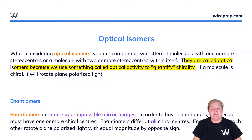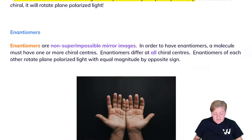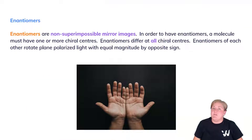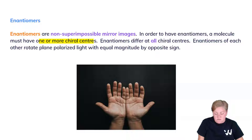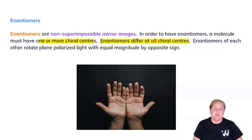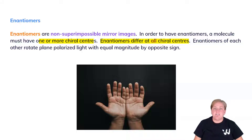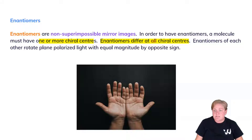Let's go through each of these different types of isomers. We start with the enantiomer. Enantiomers are non-superimposable mirror images. In other words, to have enantiomers a molecule must have one or more chiral centers. Enantiomers differ at every single chiral center — if there's one or if there's 20, it differs at them all. Enantiomers rotate plane polarized light with equal magnitude but opposite sign. So if one enantiomer rotates at plus 63 degrees, its complement would rotate at minus 63.